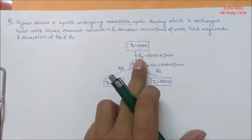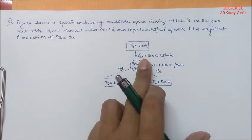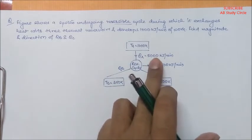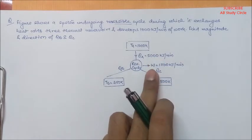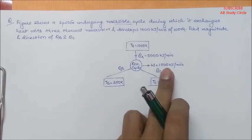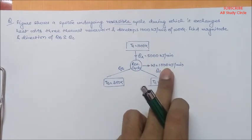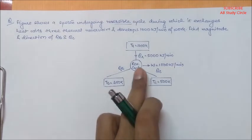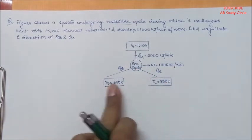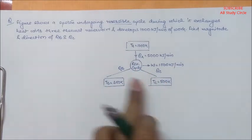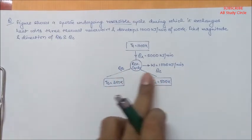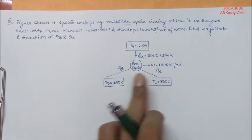This system receives QA equal to 500 kJ per minute, develops work equal to 1000 kJ per minute, and it exchanges some heat with TB and TC equal to amounts QB and QC.